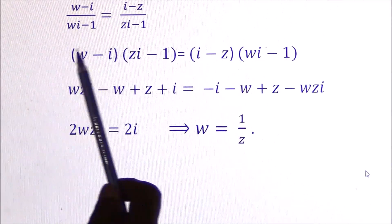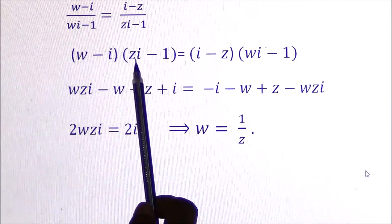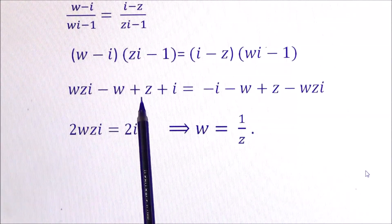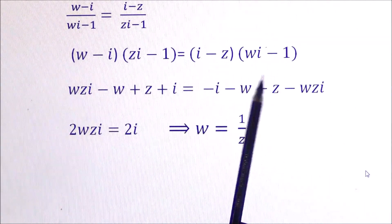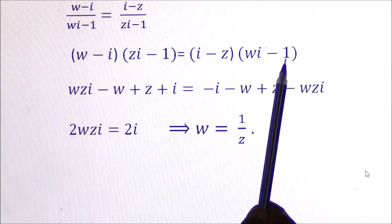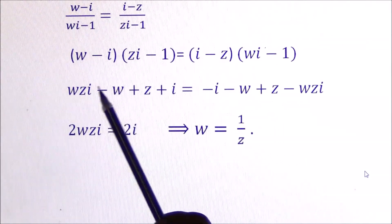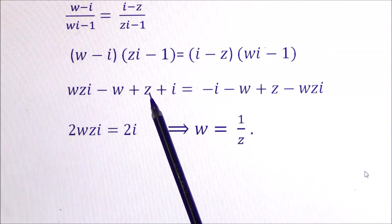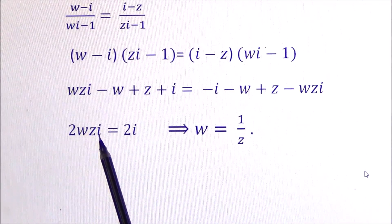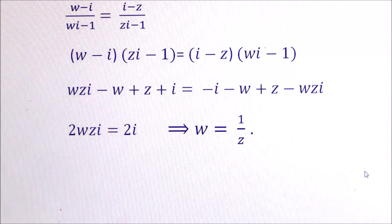Cross-multiplying and simplifying: WZi - W + Z (since Zi × i = i² = -1, and there is already a minus, it becomes +Z), then +i. This equals i × Wi = Wi² × ... giving -W, then -i, -ZWi, and +Z. Cancelling like terms on both sides: -W and -W cancel, +Z and +Z cancel, leaving 2WZi = 2i. Cancelling 2 and i gives W = 1/Z, which is the required bilinear transformation.